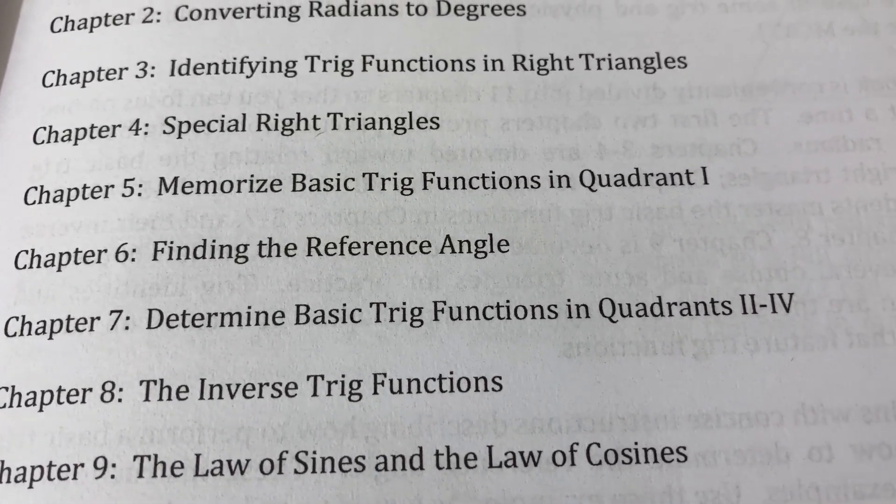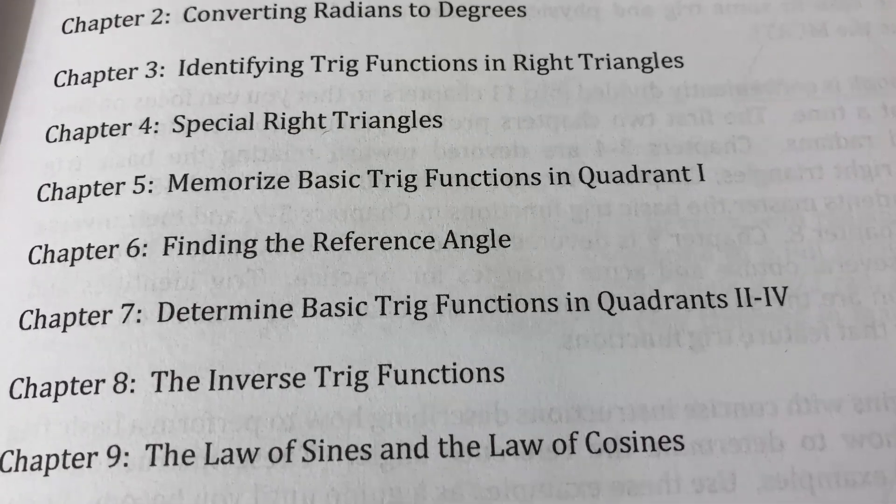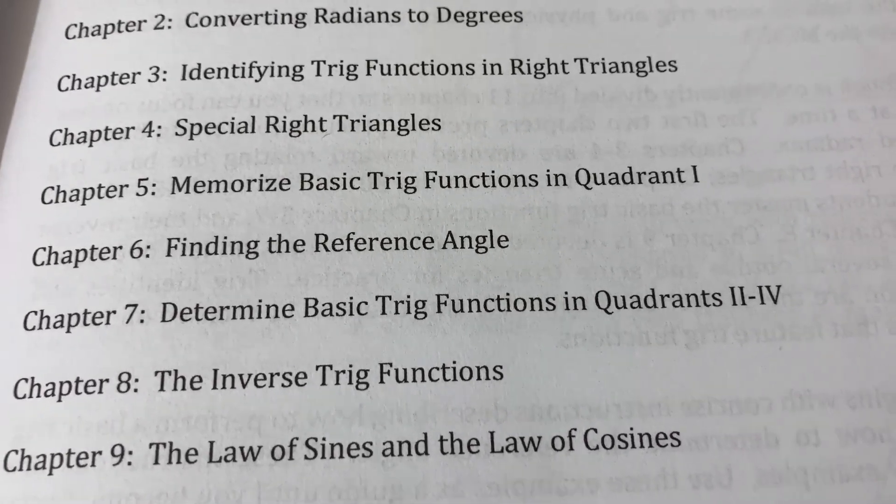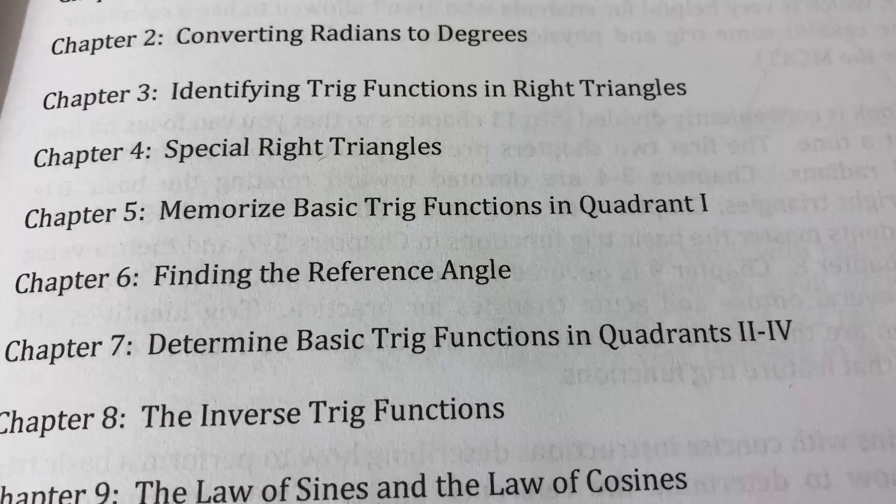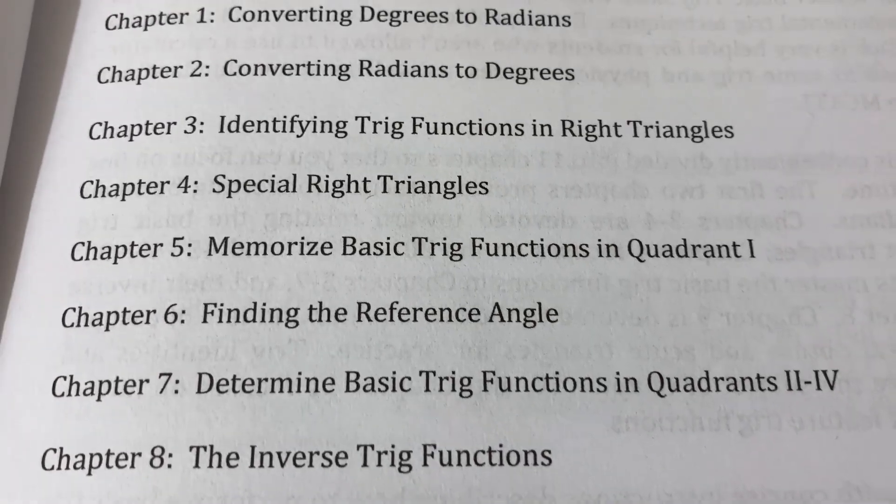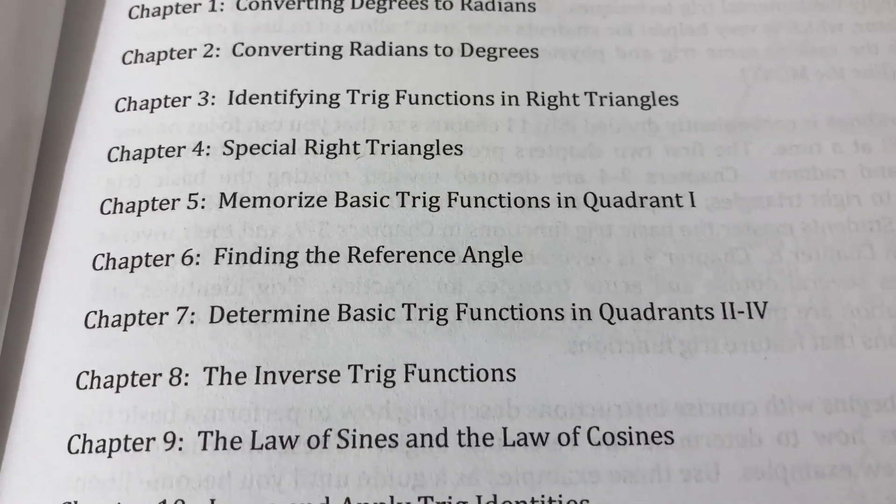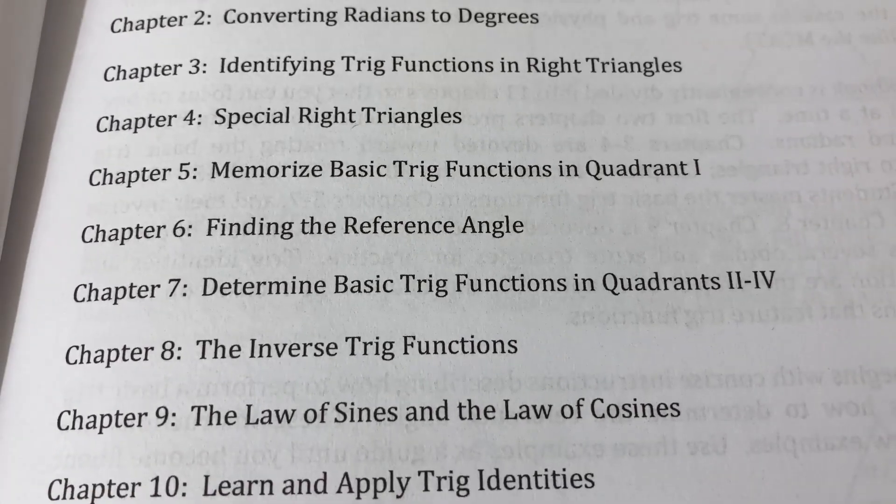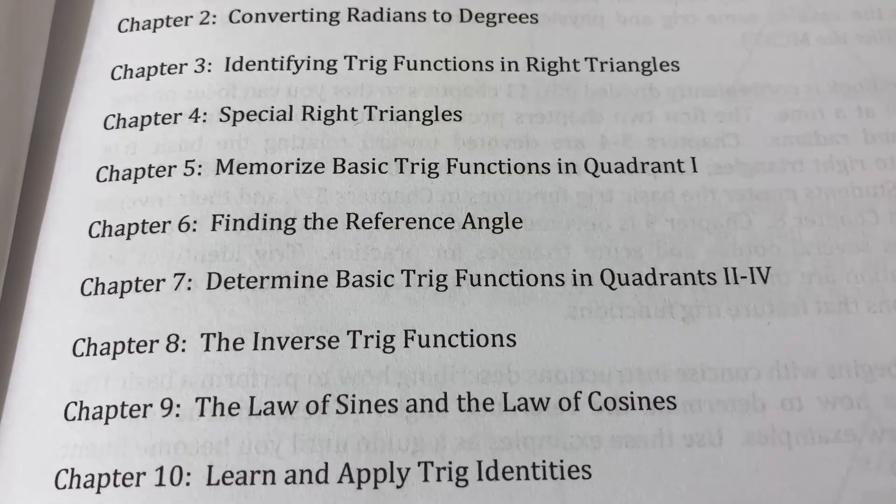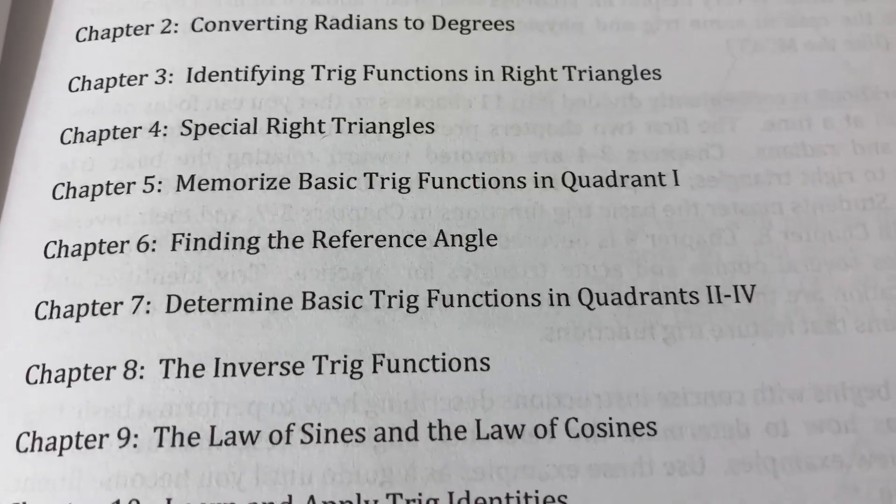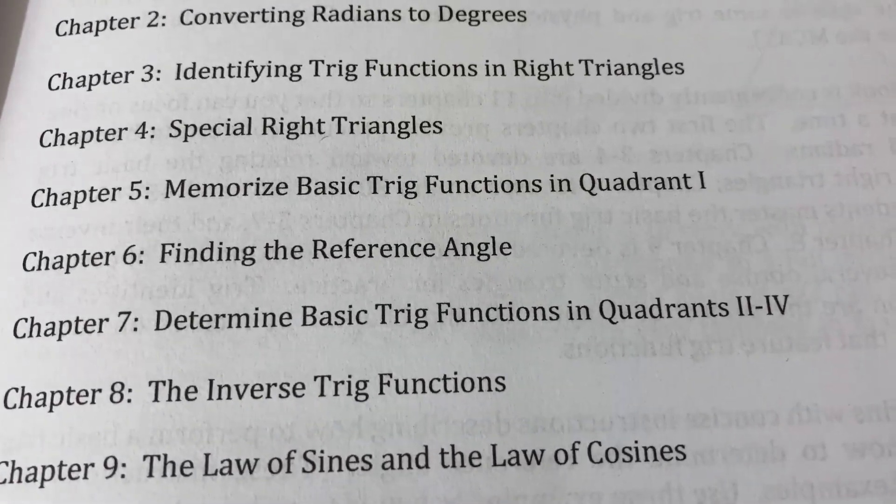Six is on finding reference angles. And then seven is on determining basic trig functions in quadrants two through four. So basically use the reference angles and your knowledge of the trig function values in quadrant one in order to come up with trig function values in other quadrants. For example, what is the sine of 270 degrees? Well, that one's pretty easy. Or what is the sine of 300 degrees.